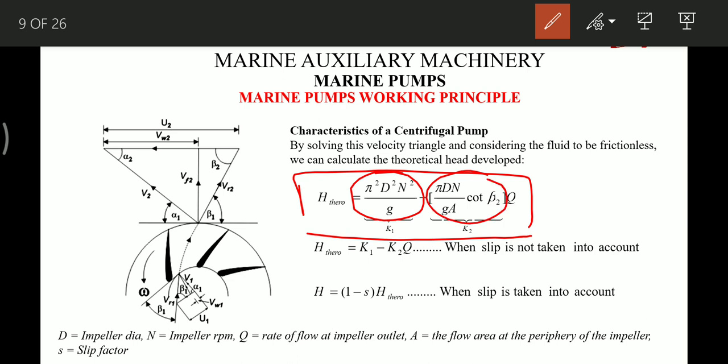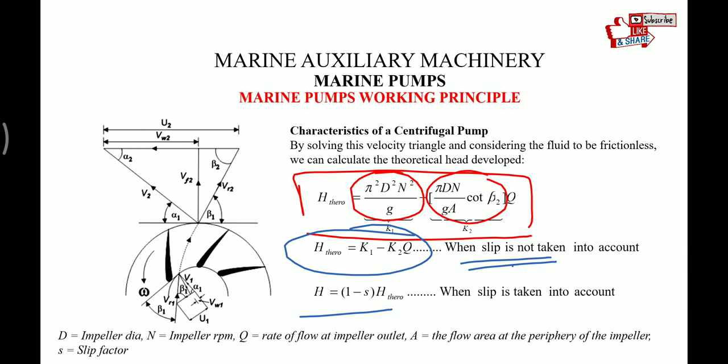The final equation is: H_theoretical = k1 − k2·Q, which is a straight line with a negative slope. This equation does not yet consider the slip factor. If we include the slip factor, the equation becomes: H = (1 − slip factor) × H_theoretical.